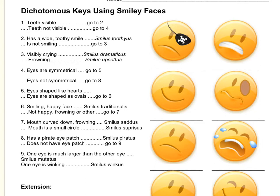Now we're going to work on one together. You'll notice in the Schoology folder there are three dichotomous keys, and it says I do, we do, you do. This is the I do part, and I am going to work on this dichotomous key while you watch. Remember how I said dichotomous keys come in questions — there's usually two questions. You'll notice there are two questions here: teeth visible, teeth not visible; has a wide toothy smile, is not smiling. Those are always two choices that you have.